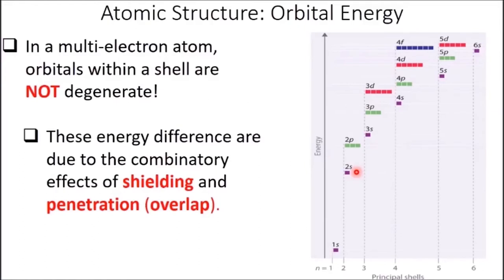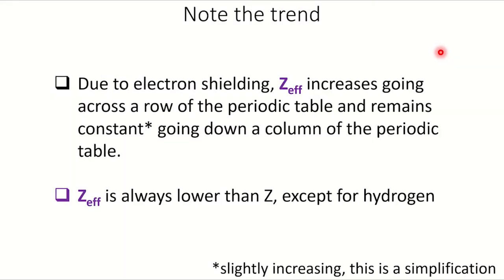Note that differences in energies between subshells can become so large that the energies of orbitals from different principal shells overlap — so that the 3d is actually higher in energy than the 4s. That is a big one: the 3d is higher than the 4s. This has ramifications for transition metals. Due to electron shielding, Z effective increases going across a row of the periodic table and remains roughly constant going down a column. Z effective is always lower than Z, except for hydrogen.